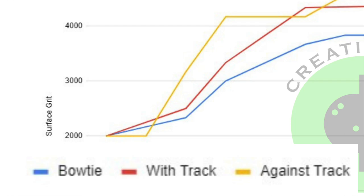On the other hand, the bowling ball sanded with or parallel to the track was the second fastest to get to 3,000 grit, while sanding in circular motions around the bowtie was the slowest to reach 3,000 grit.